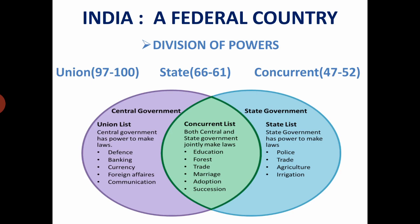The third list is the concurrent list, which initially contained 47 subjects but now has 52 subjects. Both the centre and state have power to make laws on subjects mentioned in the concurrent list. Subjects of common interest like education, population control, and forest are included in it. However, if a conflict arises on a law passed by central and state legislatures on the same subject, then the central law would prevail, i.e. central law would override the state law.